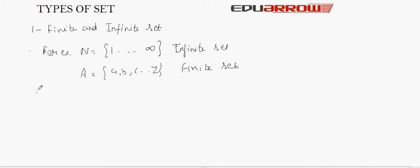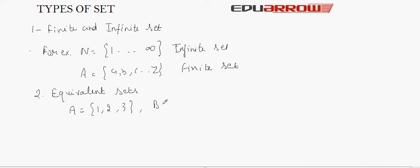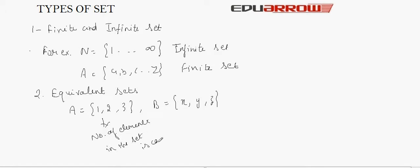The second type is equivalent sets. Two finite sets are equivalent if their cardinal numbers are the same. For example, if A is a set {1, 2, 3} and B is a set {x, y, z}, the cardinal number means the number of elements in the set. Both sets have the same cardinal number, which is 3, so A and B are equivalent sets.